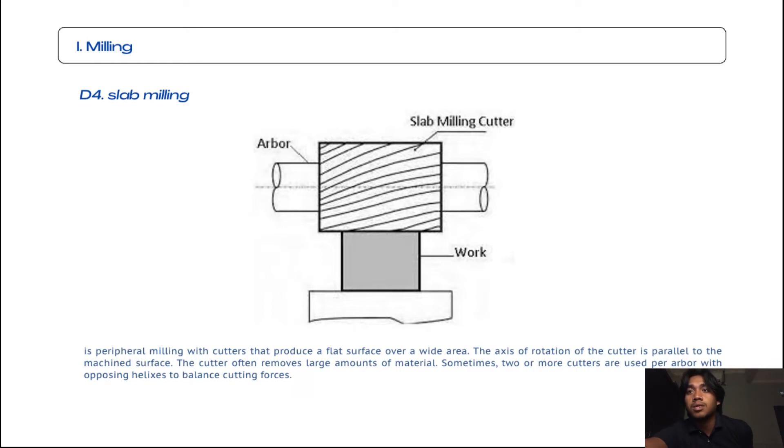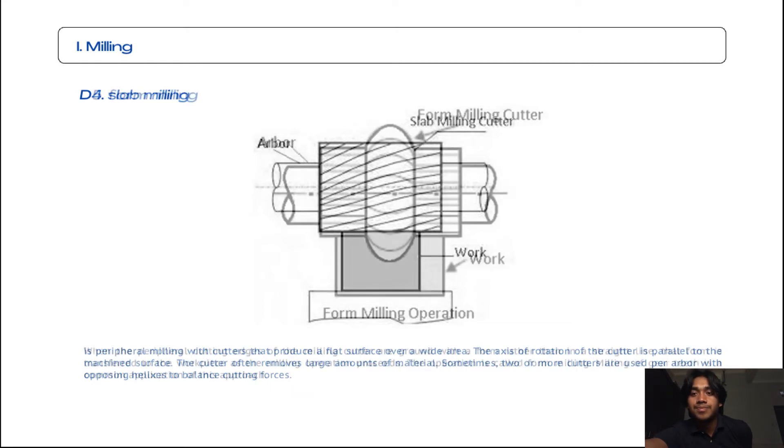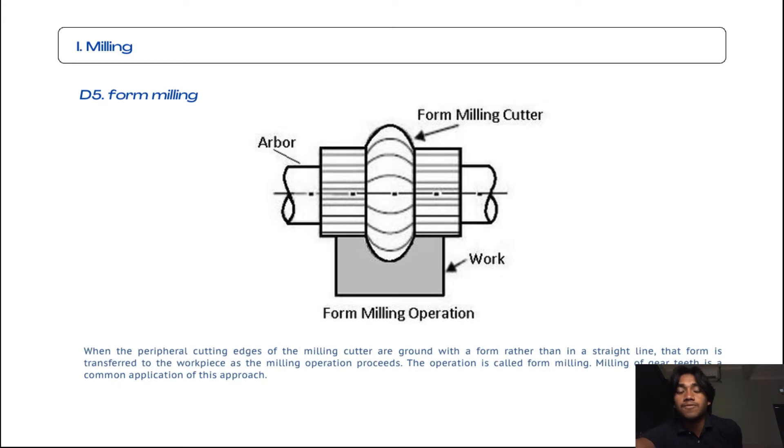We're going to the fifth subtopic for milling, which is form milling. Form milling is when the peripheral cutting edge of the milling cutters are ground with a form rather than in a straight line. That form is transferred to the workpiece as the milling operation proceeds. The operation is called form milling. Milling of gear teeth is a common application of this approach.